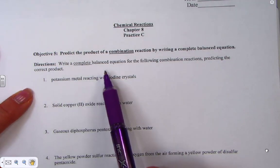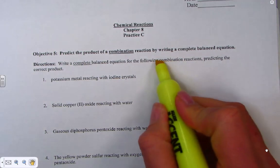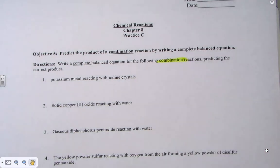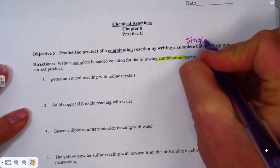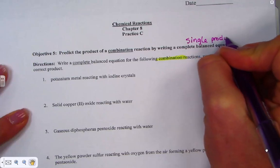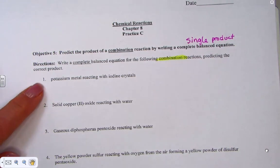Our directions are asking us to write a complete balanced equation for the following combination reactions. Please keep in mind, when we combine, what makes the combination unique? It's the only pattern that produces a single product. Many things combine to form one product. So, on the right side of our arrow, we know that we are forming one ingredient, one substance. In our first of the five questions, it says, potassium metal reacting with iodine crystals.